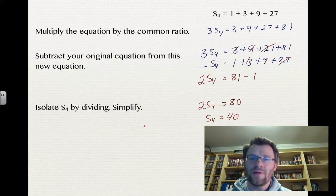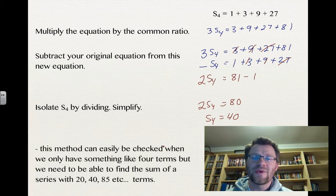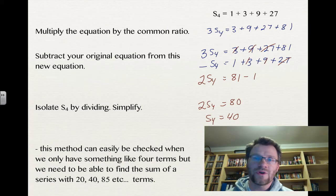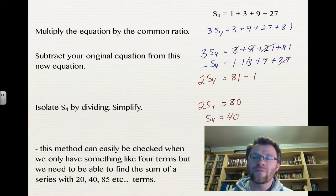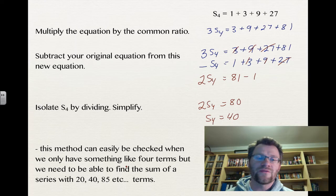The reason we're doing it this way is because we don't always just have four terms — we may end up with 20, 40, or 85 terms. So we're going to use this process to find a general formula.